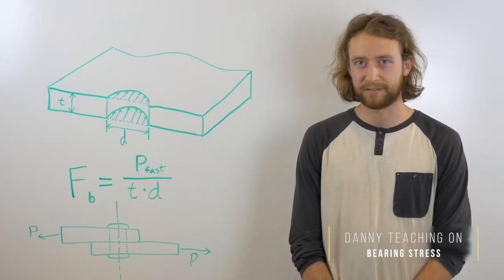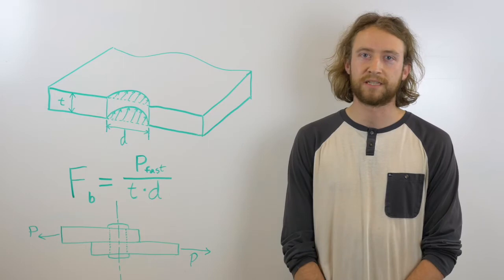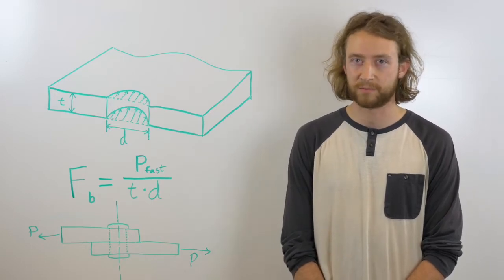Aircraft consists of a staggering amount of individual parts, many of which are fasteners. For example, a Boeing 747 has over six million parts and over half of them are fasteners.